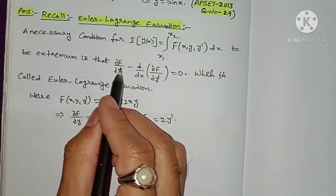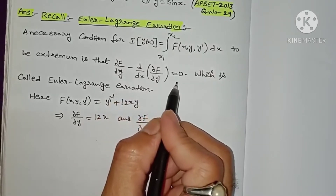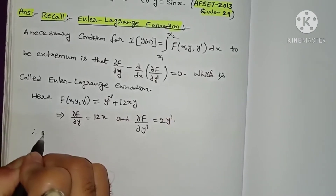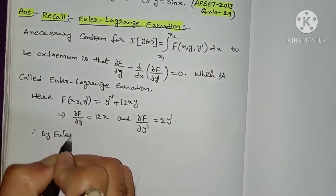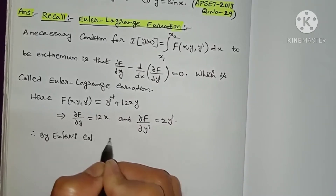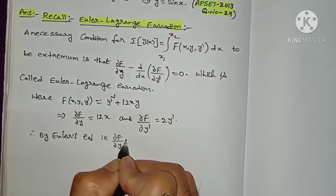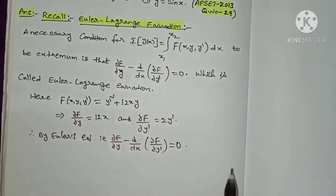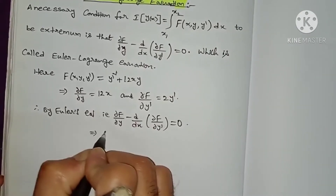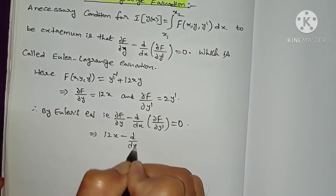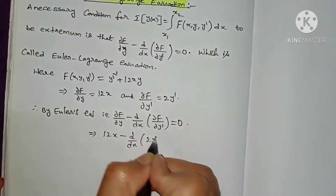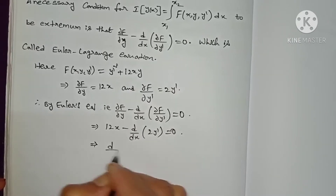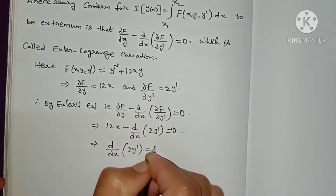By the Euler-Lagrange equation, ∂F/∂y − d/dx(∂F/∂y') = 0. Substituting these values, we get 12x − d/dx(2y') = 0. Simplifying this equation, we get d/dx(2y') = 12x.